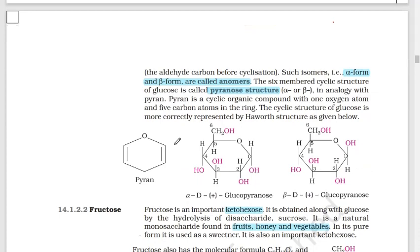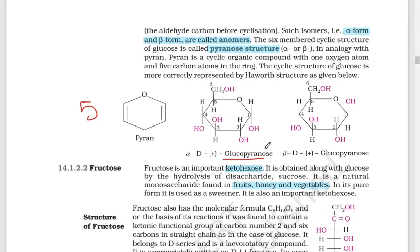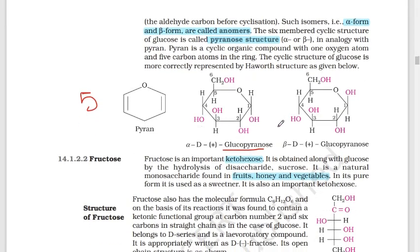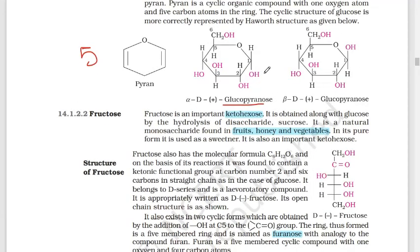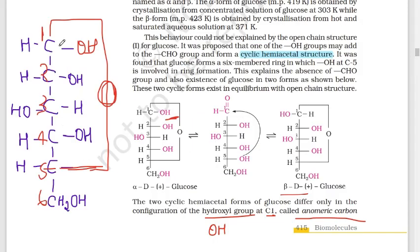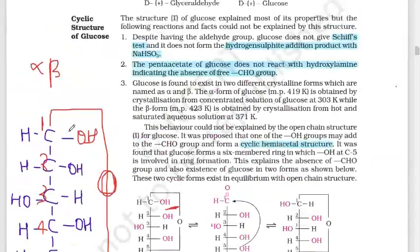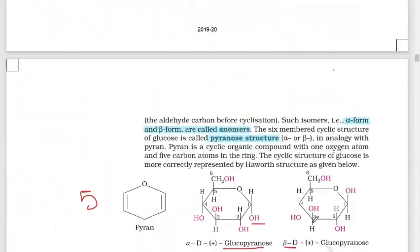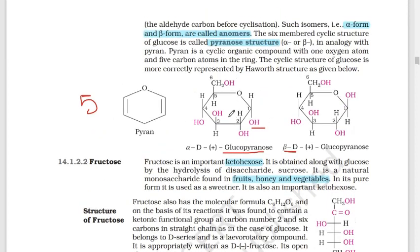Pyran is an organic compound. In this structure, there is one oxygen and five carbons. This is the glucose cyclic structure, which is a pyranose structure. You can practice drawing this structure.